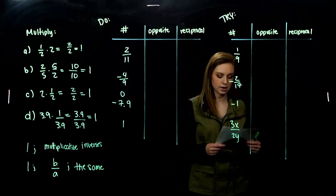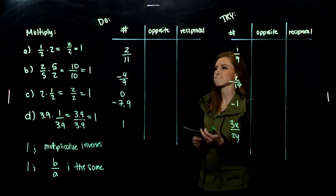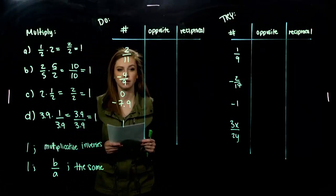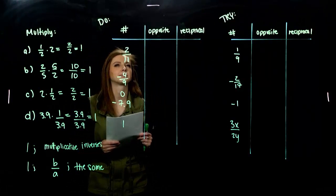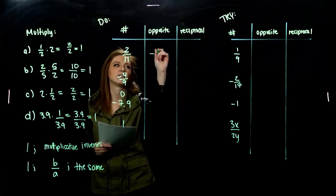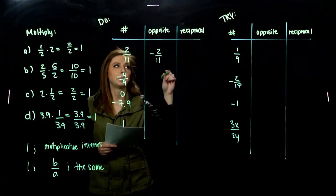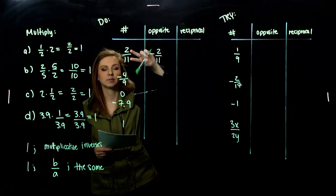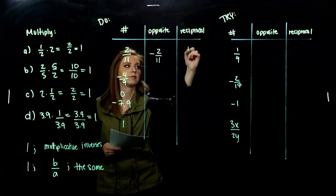So, let's work through the chart together. 2 over 11. Its opposite. Think back to a previous section. Is what? Negating it. So, negative 2 over 11. But, the reciprocal of the original number is what? Flipping it upside down. 11 over 2.